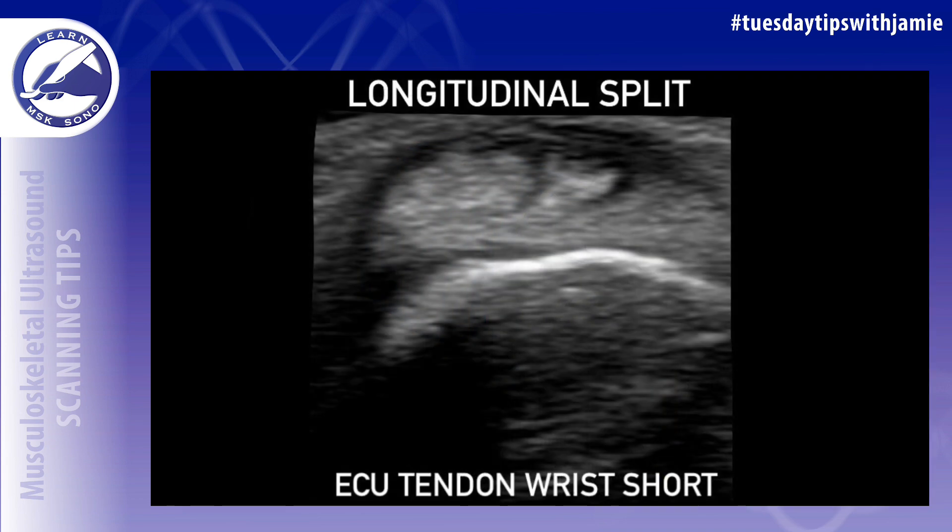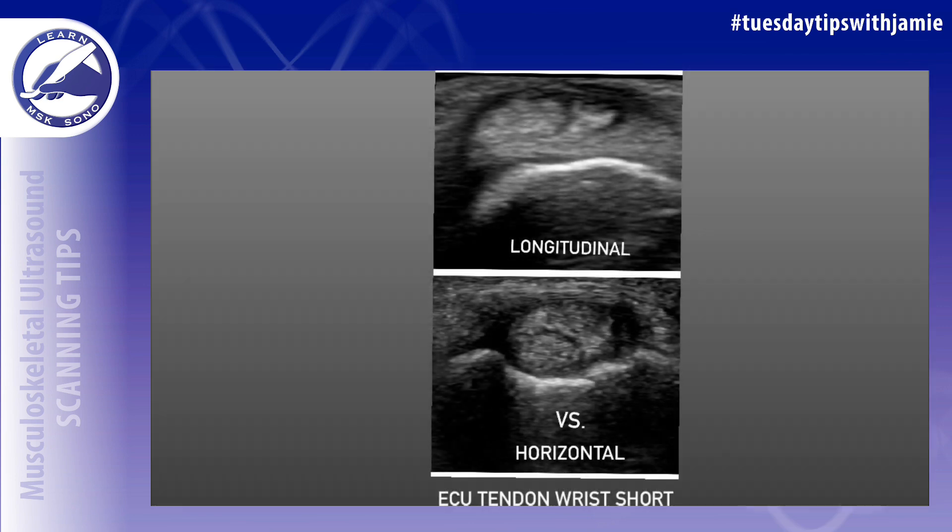On ultrasound, a split tear is visualized as a hypoechoic or anechoic cleft running through the tendon. A longitudinal split tear will be visualized extending from the top to the bottom of the tendon on the short axis views, whereas a horizontal split tear is visualized extending from the left to the right on the short axis views.